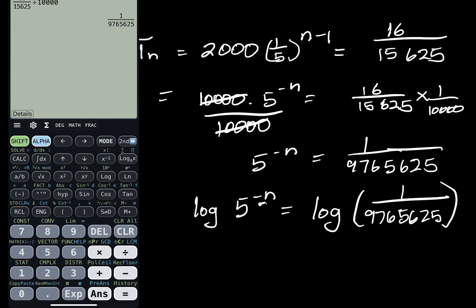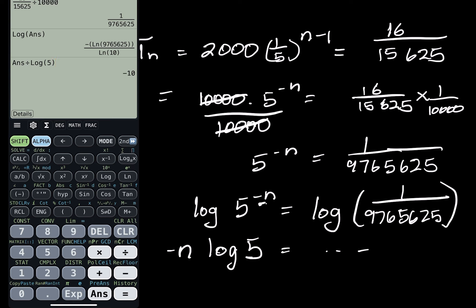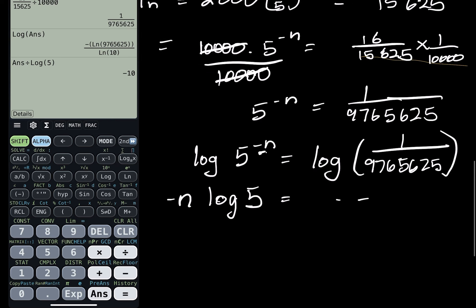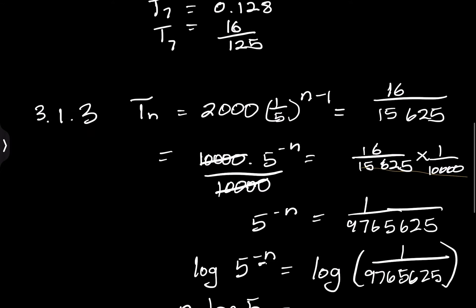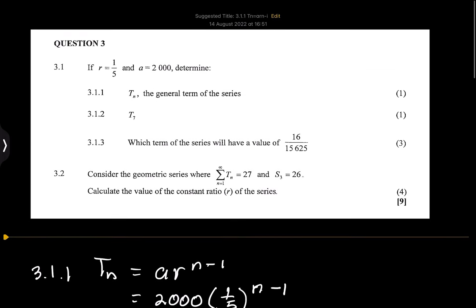Remember with logarithms, when we have a power we bring it down. So we have negative n times log 5 equal to the log of 1 over 9,765,625. Dividing both sides by log 5 gives negative n equals negative 10, and therefore n equals 10. So the 10th term of the series is equal to 16 over 15,625.